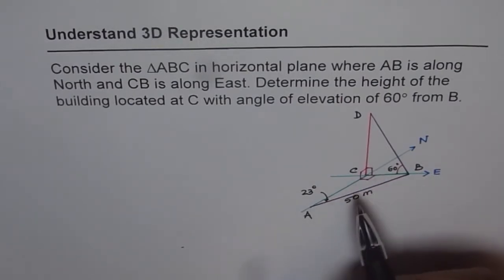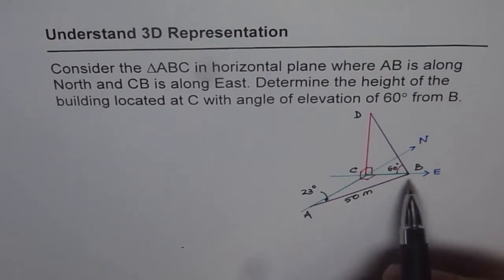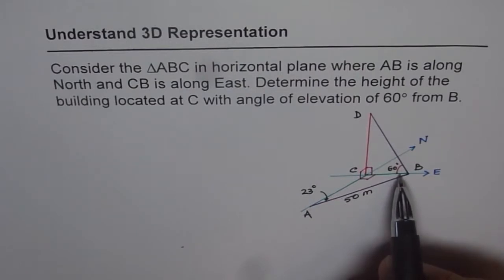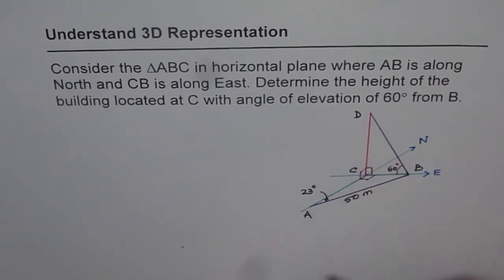In the given diagram, we have triangle ABC, and distance between A and B is given to us as 50 meters. Angle at A is 23 degrees, and angle of elevation is 60 degrees. From this information, we need to find height of the building.